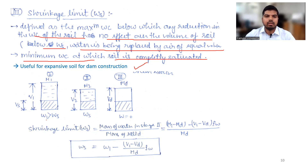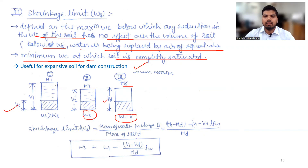To calculate the shrinkage limit: when water content of soil is greater than the shrinkage limit, we have mass M1 and volume V1 of the soil sample. When it reaches the shrinkage limit, we have mass M2 and volume V2. After the shrinkage limit, when water content becomes zero, the mass is Md and volume remains V2. The shrinkage limit Ws is the ratio of mass of water in the second stage to the mass of solids: Ws = (M1 − Md) − (V1 − Vd) × ρw, all divided by Md.